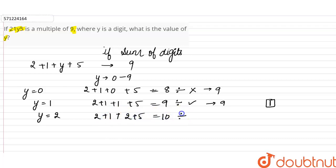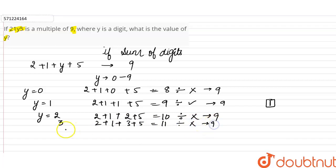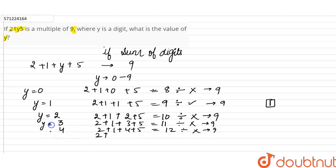When y is equal to 3: 2 plus 1 plus 3 plus 5 equals 11, and 11 is not divisible by 9. When y is equal to 5: 2 plus 1 plus 5 plus 5 equals 13, and 13 is not divisible by 9.